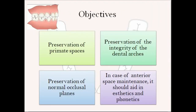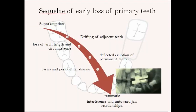Moving on to the objectives of space maintainers — why we need them. First, we need to preserve the primate spaces, which are present mesial to the upper canine — between the upper lateral and primary upper canine, and between the lower primary canine and the first primary molar. Second, preservation of the integrity of the dental arches. Third, to preserve the normal occlusal plane. In the case of anterior space maintainers, it should also aid in aesthetics and phonetics.